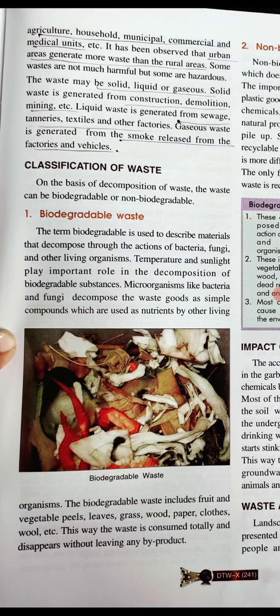Biodegradable waste includes fruit and vegetable peels, leaves, grass, wood, paper, and cloth — basically things produced in a natural way. All natural things produce biodegradable waste. This waste disappears completely into the environment without leaving any harmful by-product.